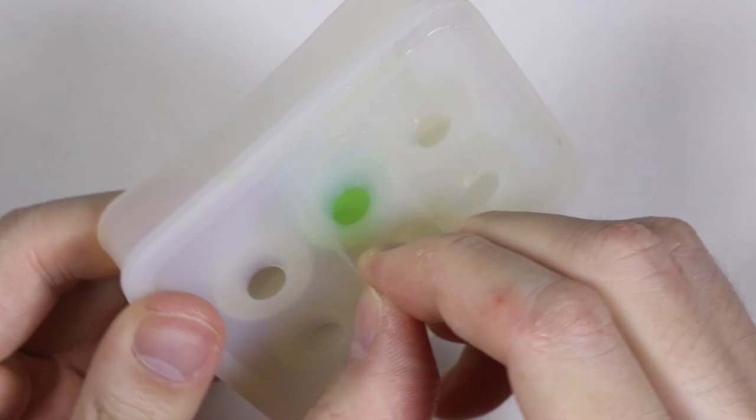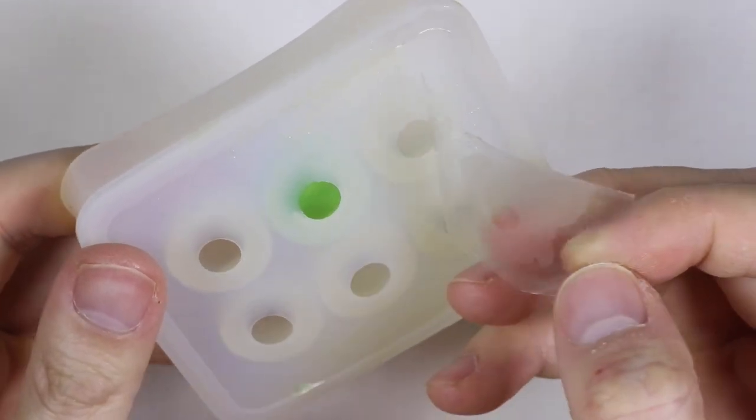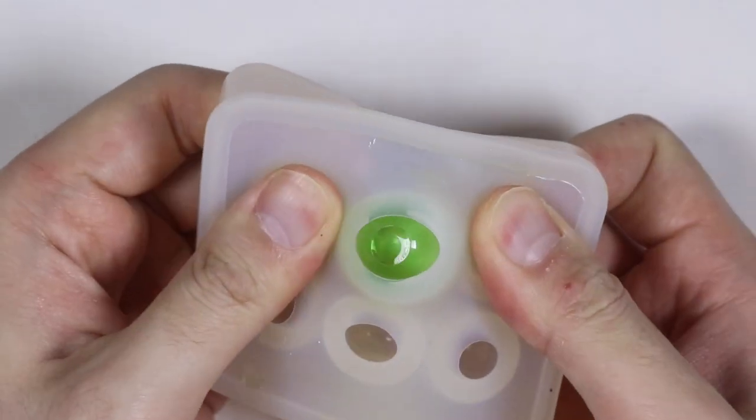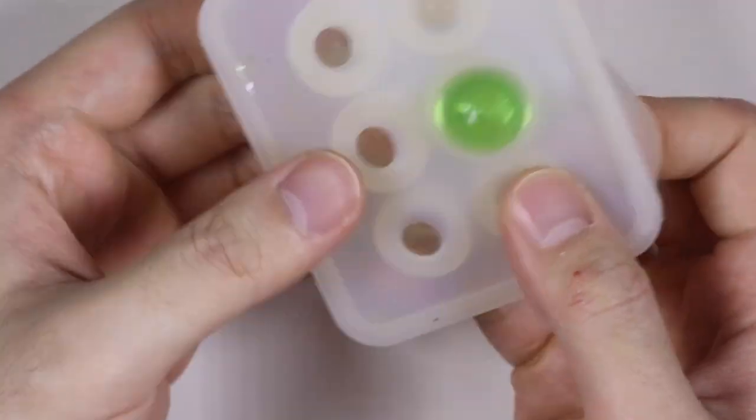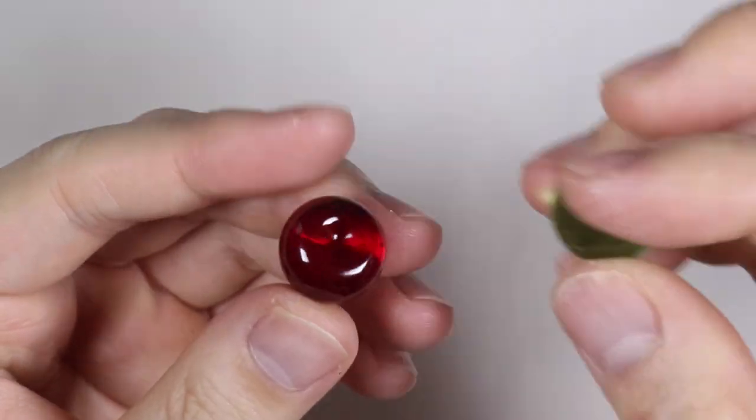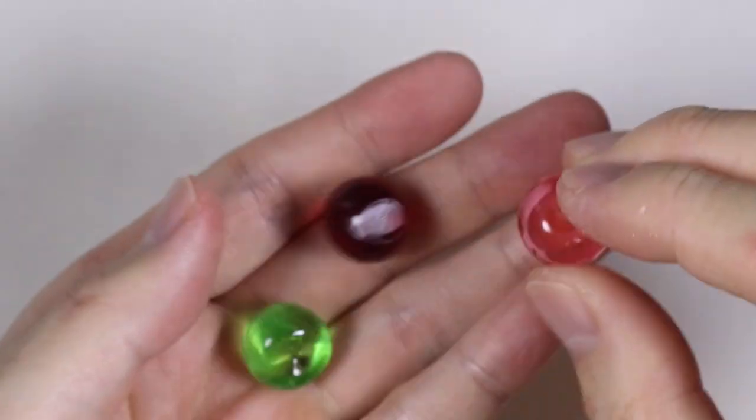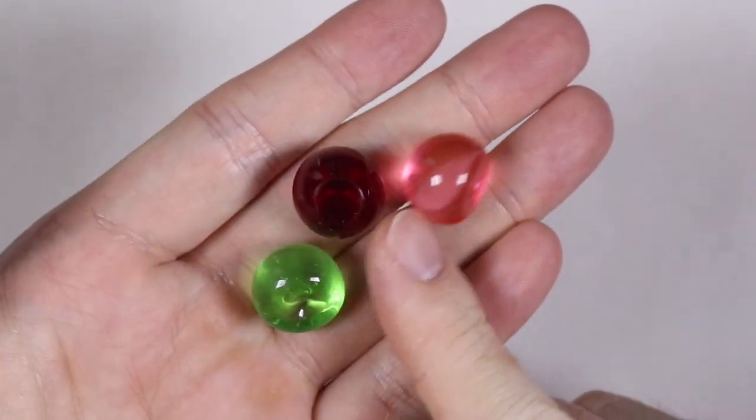And once fully cured, I'm just going to remove the tape off of the mold, and remove the resin piece from the mold itself. And we're going to have our little apple shaped resin pieces, and I made it in three different colors: green, a dark red, and a light red.